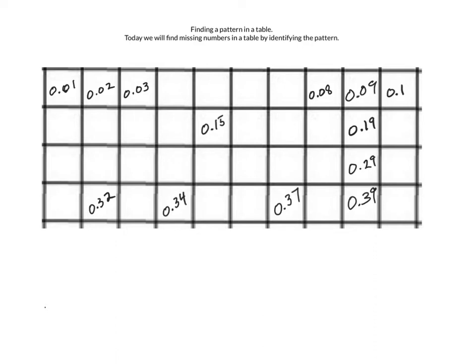If we look at the pattern going across, it's pretty easy to tell that we're counting by 100, so 100, 200, 300, so 400, 500, 600, 700, and we can continue it.